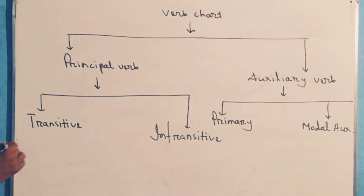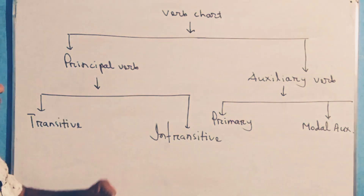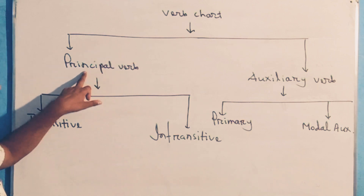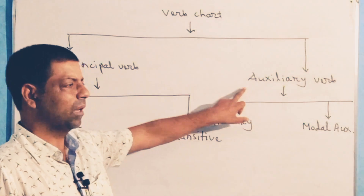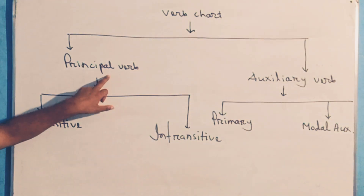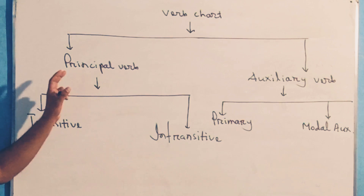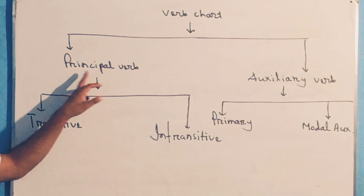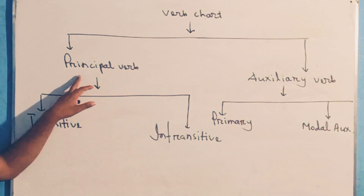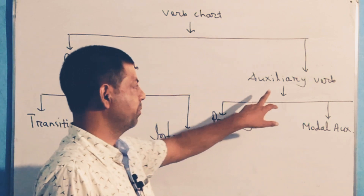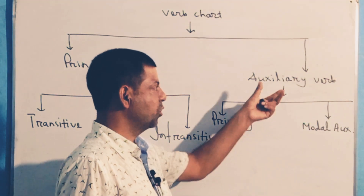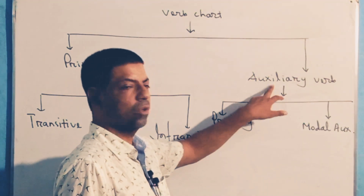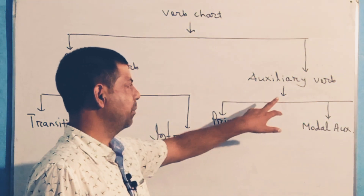Again, please look at the board and listen carefully. Verb chart: principal verb — meaning main verb — and auxiliary verb — meaning helping verb. The verb which gives meaning individually and does not need the help of another verb is called a principal verb. The auxiliary verb is the verb which helps another verb to make different tenses — that is called auxiliary verb. Auxiliary verbs may be subdivided into two types: primary auxiliary and modal auxiliary.